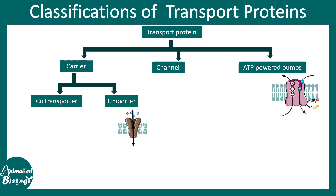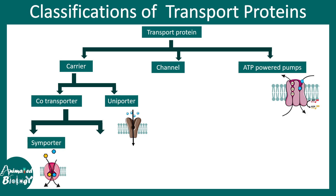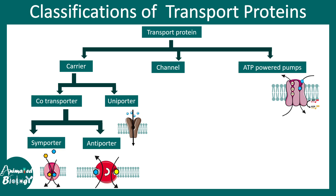In the case of co-transporters, more than one molecule — actually two molecules — are transported together. Among co-transporters there are simporters, where the direction of transport is similar: both molecules are coming inside or both are going outside. There are also antiporters, where one molecule is moving outside while another molecule is coming inside.